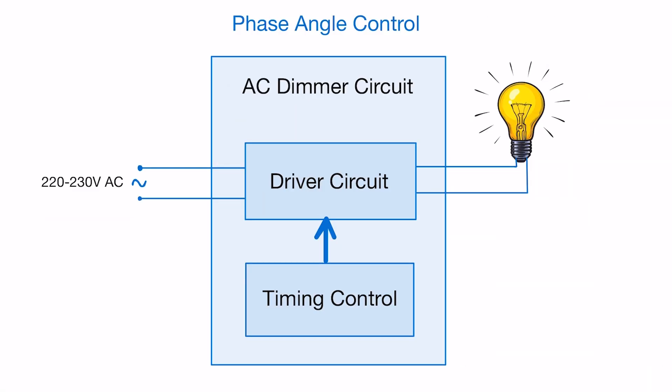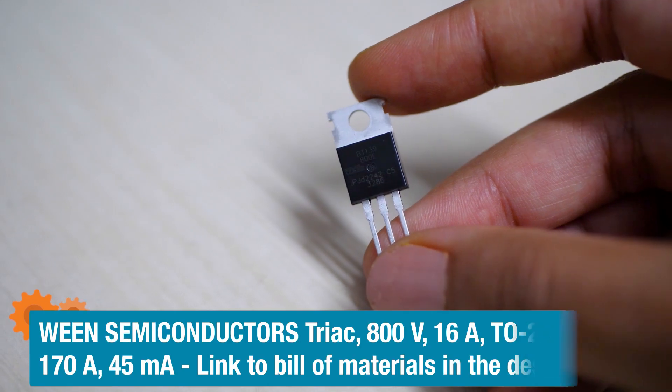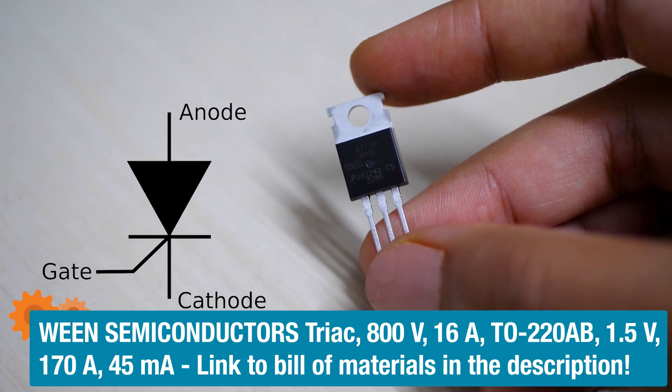The phase angle control or phase cutting circuit can be divided into two parts: one where we need an AC driver for the load and second where we need a timing reference to control this driver. At the heart of the driver circuitry we use a device called triac.